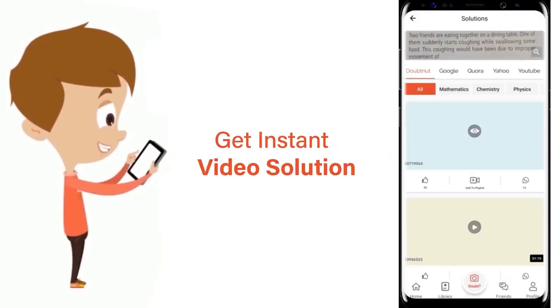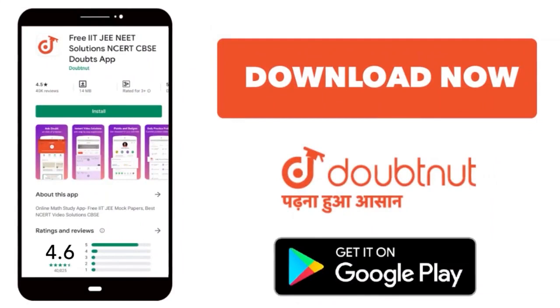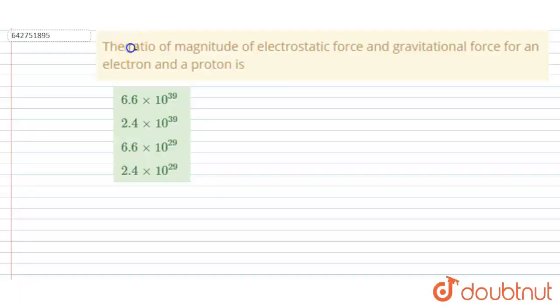Hello everyone. Ratio of magnitude of electrostatic force and gravitational force for an electron and a proton. So if you see, let's suppose an electron and proton are kept at some distance r.